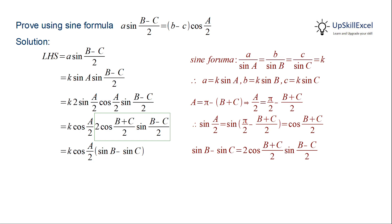From the sine formula, we can replace k sin B and k sin C by b and c respectively, giving us (b-c)cos(A/2).